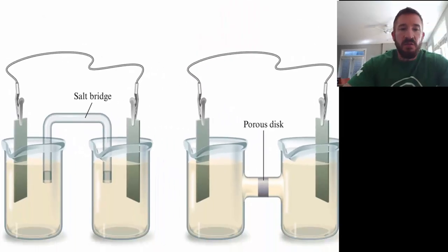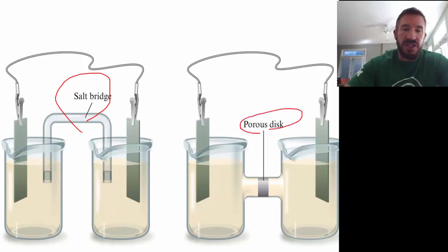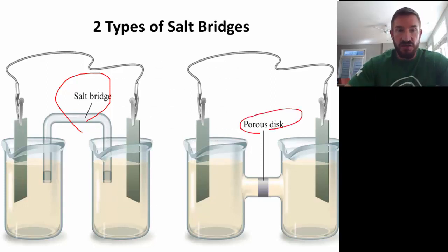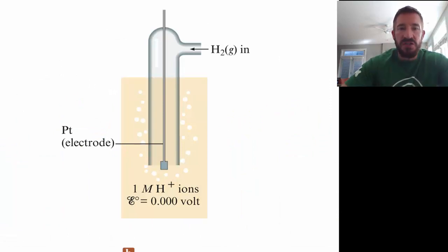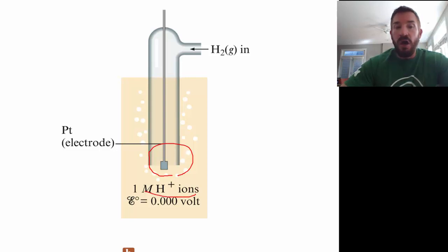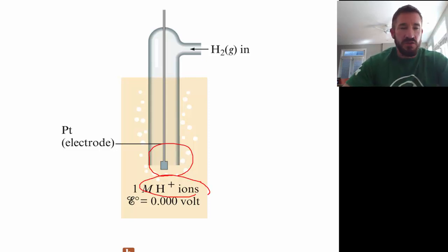Another thing you might have noticed: something that we can use instead of a salt bridge — we've talked about a salt bridge as a porous disc, so those are really interchangeable. Also, sometimes these reactions include gas. Simply, you have a tube in which gas is pumped in, and you have a platinum electrode, and you need an acidic solution — usually one molar hydrochloric acid or some acid. And that is the standard zero voltage on which the cell reduction potential table is based.